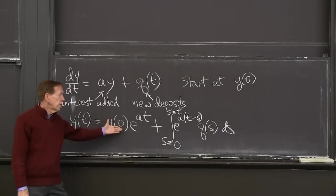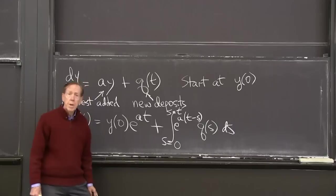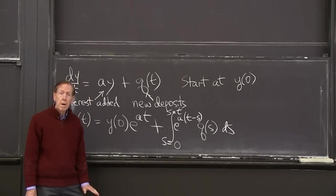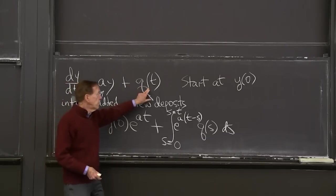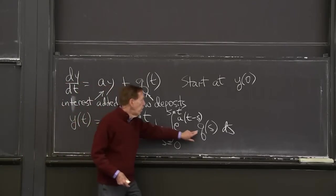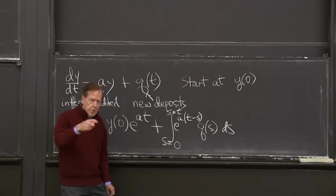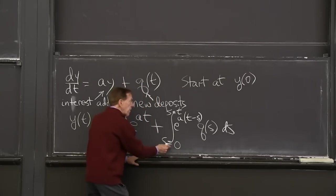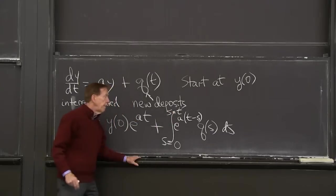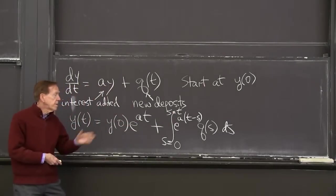The null solution that grows out of the initial condition. The particular solution that grows out of the source term, q. Of course, I've used q of t all the way. Here I call it q of s. So I have to introduce an integration variable, s, which goes from the start of these deposits until the current time and grows like that. So that's the formula.